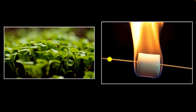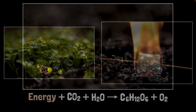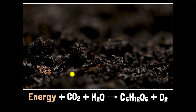So why do certain chemical reactions absorb while others release energy? And more importantly, where does energy go or come from? That's what we want to figure out in this video. Let's start with the plants growing. The reaction is called photosynthesis — it's where carbon dioxide reacts with water to produce glucose, or sugars, and oxygen.